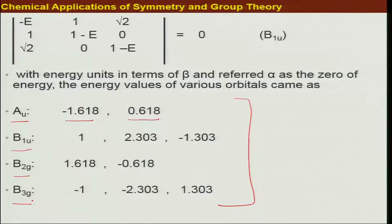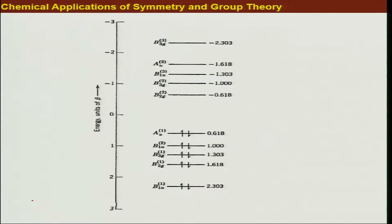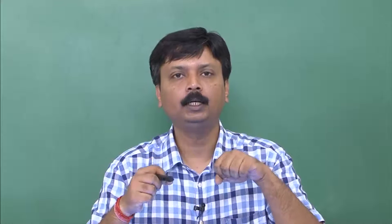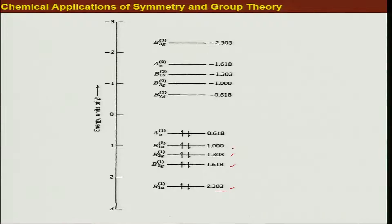Our job was to arrange these energy levels. Beta is negative, so the ordering of energy is done in the way shown on screen. These energies are expressed in terms of beta, and since beta is negative, overall these energies are negative. Zero corresponds to the energies of atomic orbitals not interacting — that is, before bond formation. Favorable interaction lowers energy. Terms like minus 0.618 beta are positive overall, making them higher energy levels.